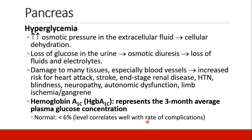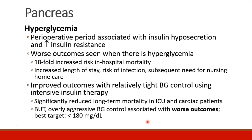The hemoglobin A1c represents the 3-month average plasma glucose concentration, where normal is below 6%, and hemoglobin A1c level correlates very well with the patient's rate of complications in the perioperative period. The perioperative period is associated with insulin hyposecretion and therefore increased insulin resistance and hyperglycemia. Many procedures will have worse outcomes in the setting of hyperglycemia, with studies showing an 18-fold increased risk of in-hospital mortality, increased length of stay, risk of infection, and subsequent need for nursing home care.